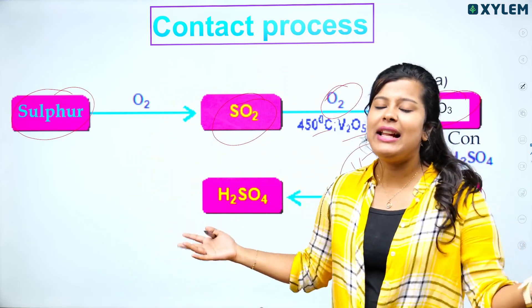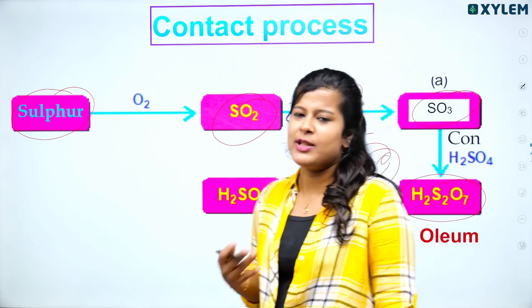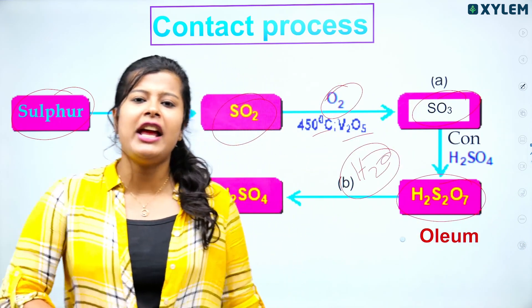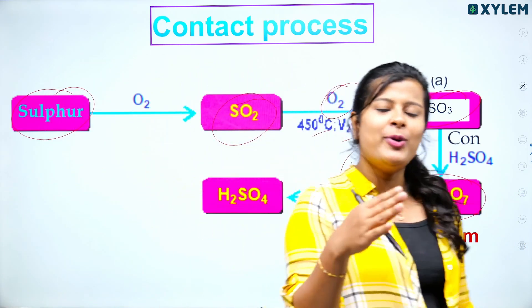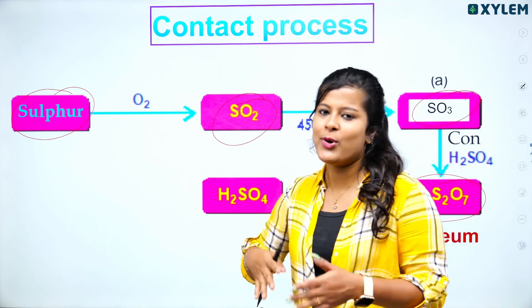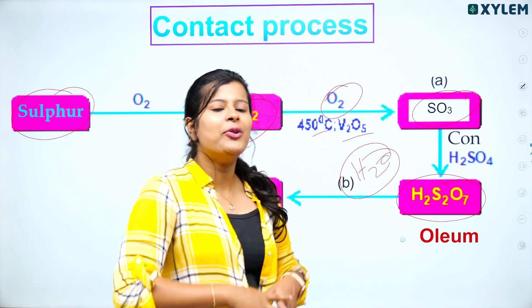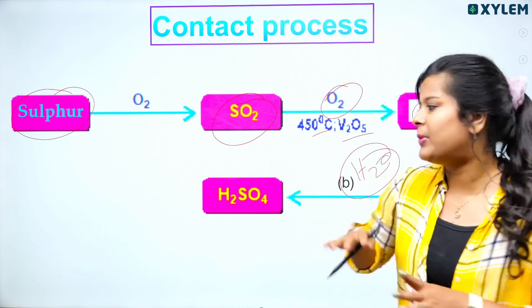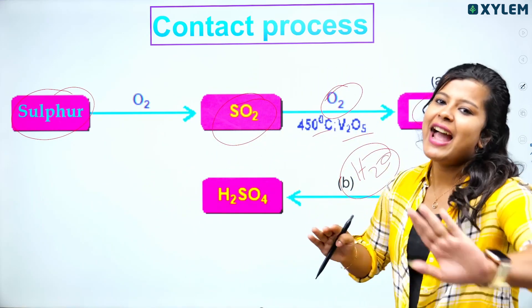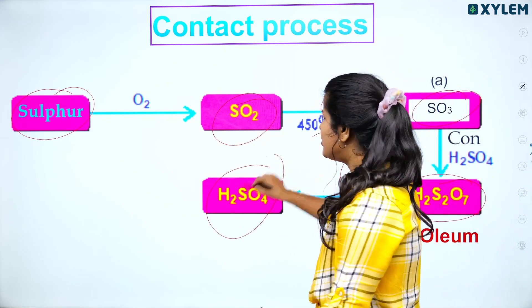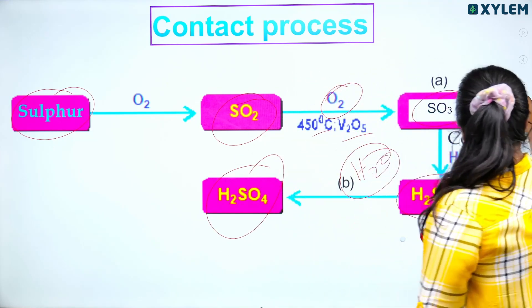It's very simple. The contact process gives us H2SO4, starting with sulfur reacting with oxygen, through SO2 and SO3, ending in sulfuric acid H2SO4.